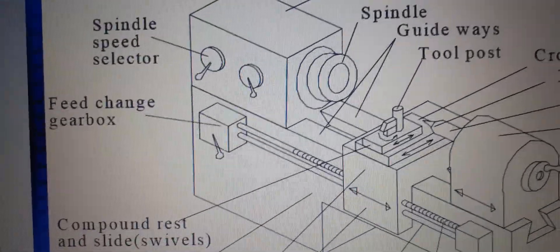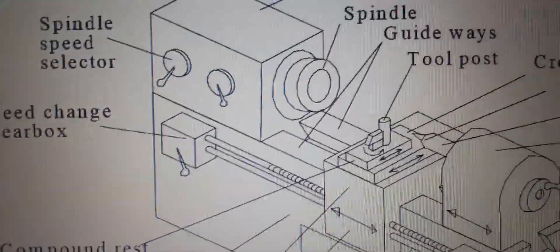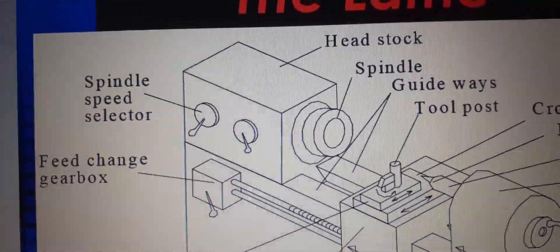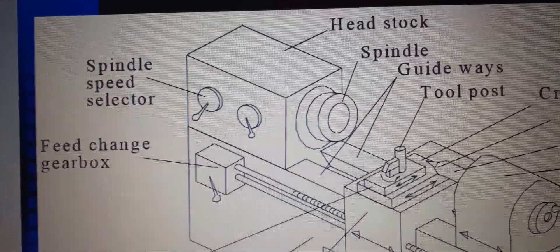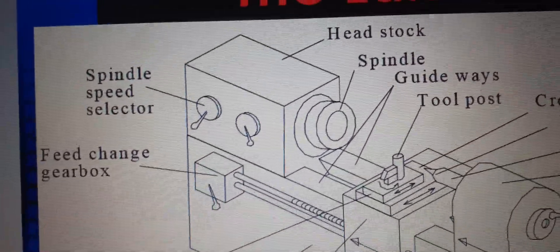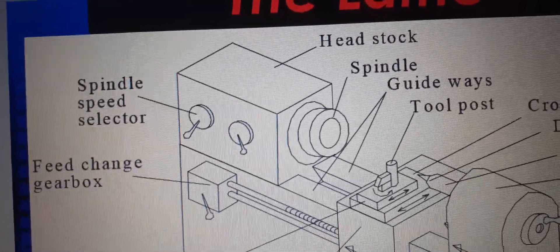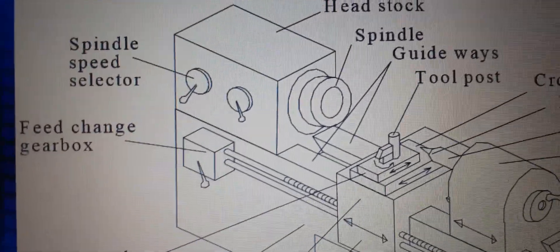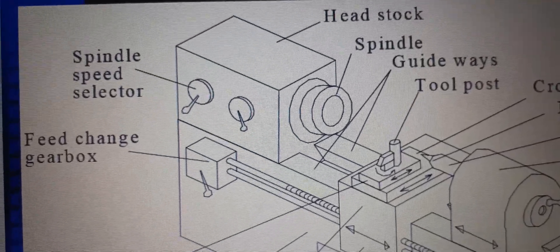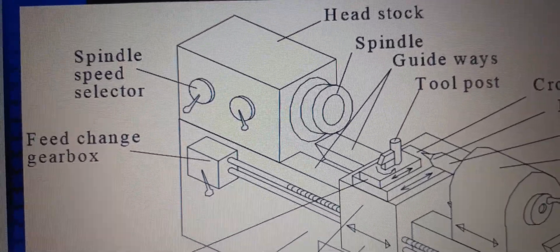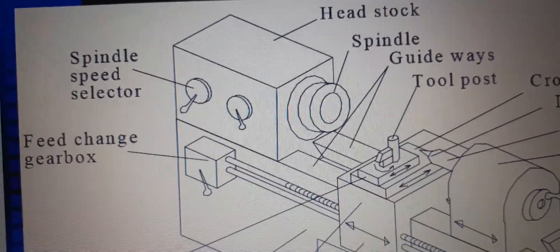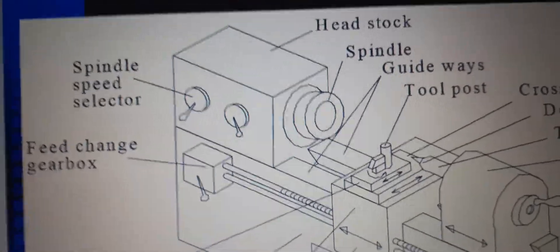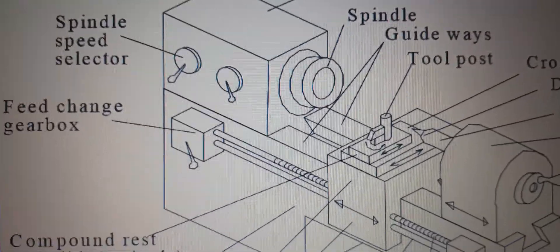The bed is a U-shaped strong box section mounted on support columns and carries all the working parts of the lathe. The headstock and tailstock are located at the left end and right end of the lathe bed respectively. The carriage with the cross slide and tool post slides over the bed between the headstock and tailstock.